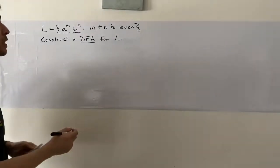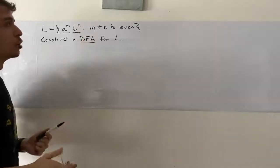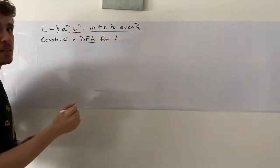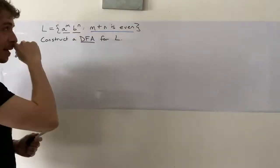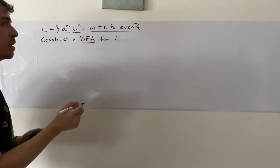So notice here, whenever you are looking at a problem and you're not sure what to do, look at what the condition is actually saying. So here it's saying the number of A's plus the number of B's is an even number.